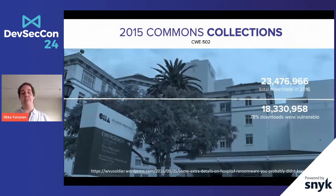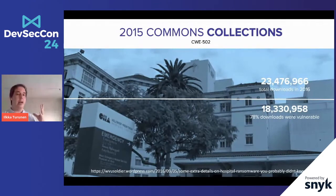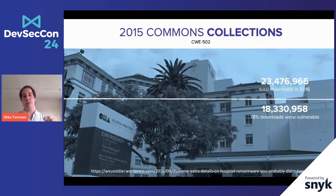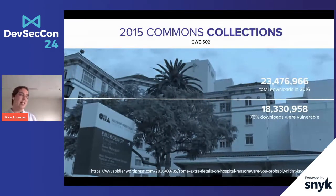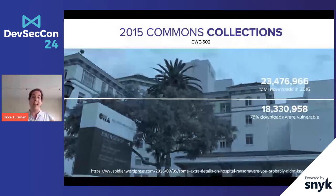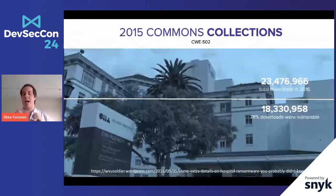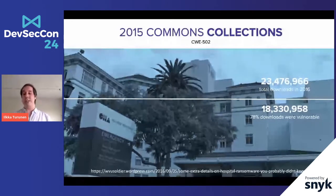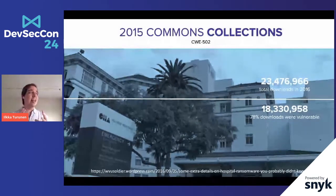It had a huge impact — for example, it closed the Hollywood Presbyterian Hospital in Los Angeles for a while because someone used this particular component to install ransomware on their computers. My employer, Sonatype, actually runs Maven Central, so we get to see the patterns of people downloading open source. When we looked at it a year later, we saw that about 80% of all downloads of this component were still against that known vulnerable version.